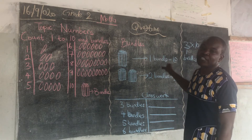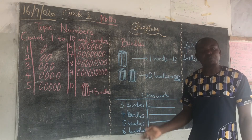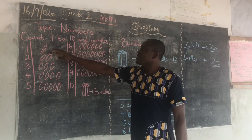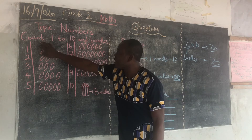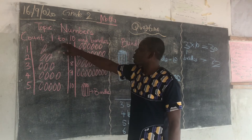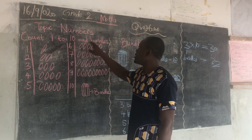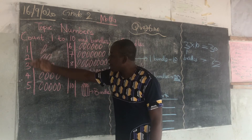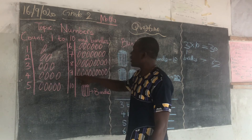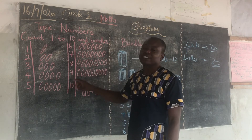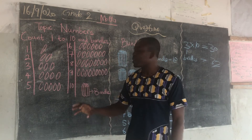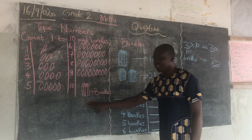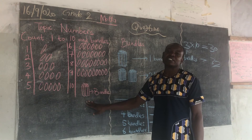You should be able to understand this — it is very simple. We are looking at counting 1 to 10 and bundles. We have just 1 to 9 that is counted for us, but the bundle is from 10. They are counting in 10s.